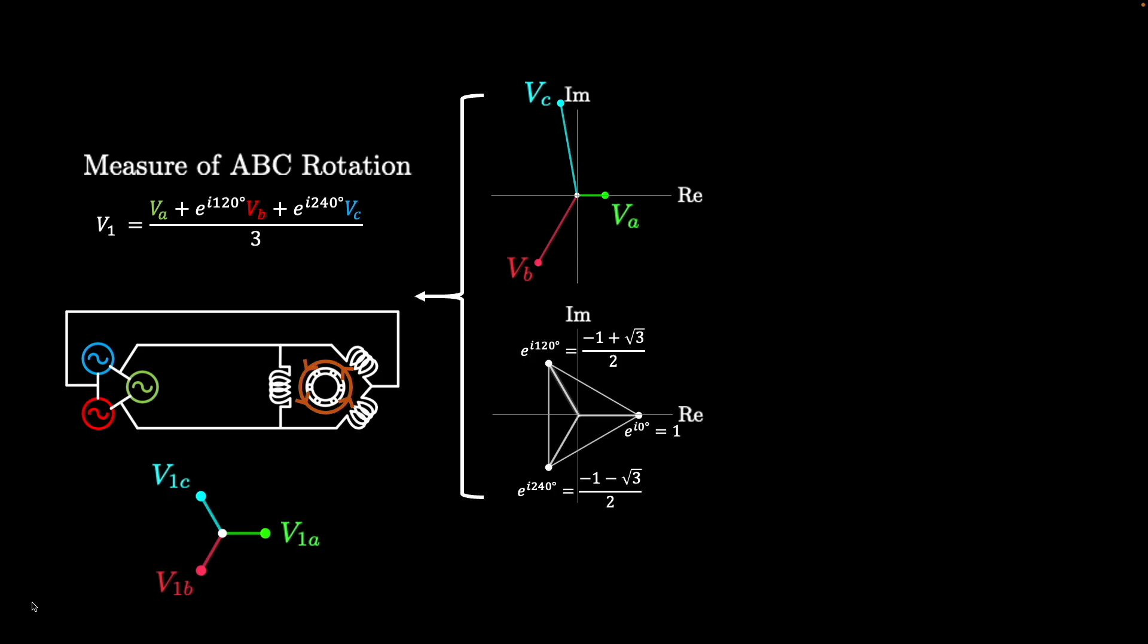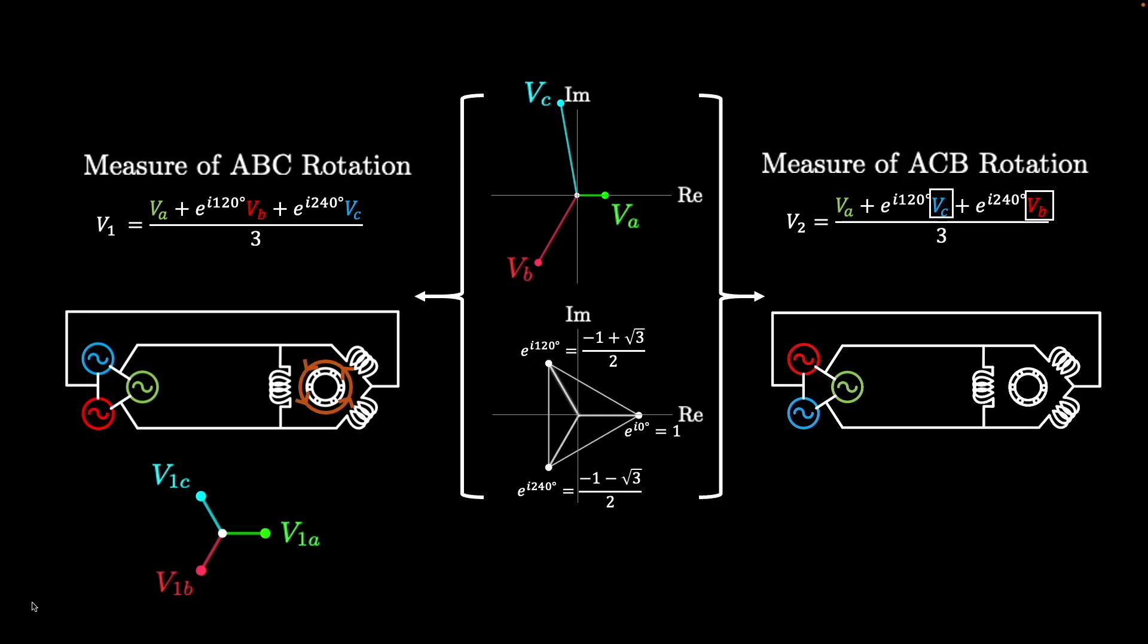To find the measure of ACB rotation in the system, the previous equation is used again, but VB and VC switch places. This measure is called V2 and gives the amount of clockwise rotation in the motor example. Like before, V2 is used to create three other phasors that have opposite rotation from the V1 phasors.